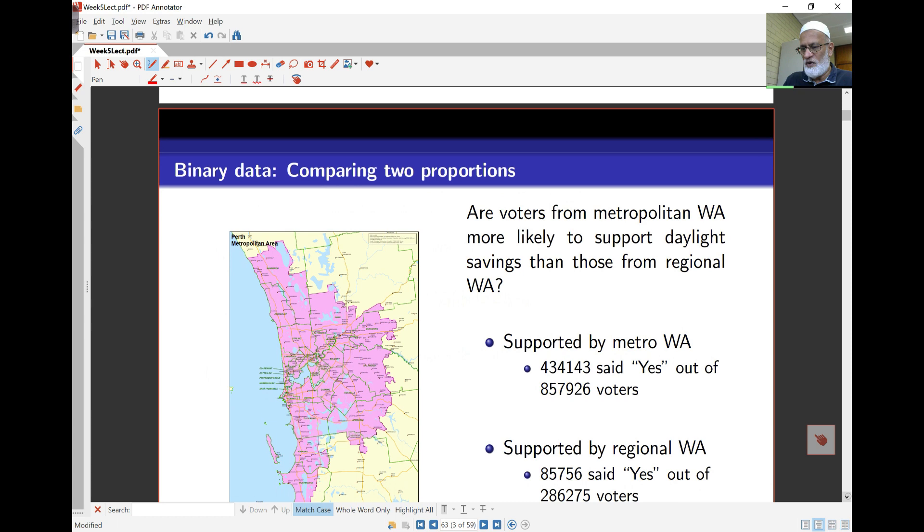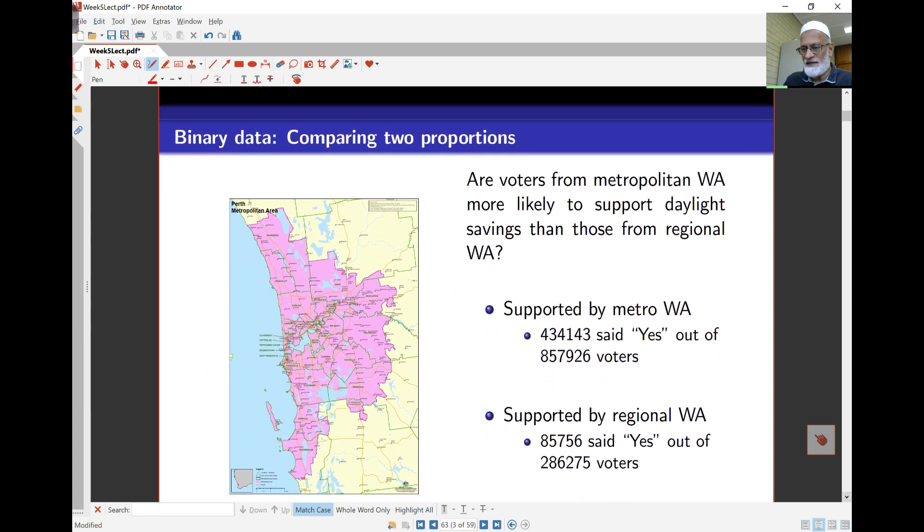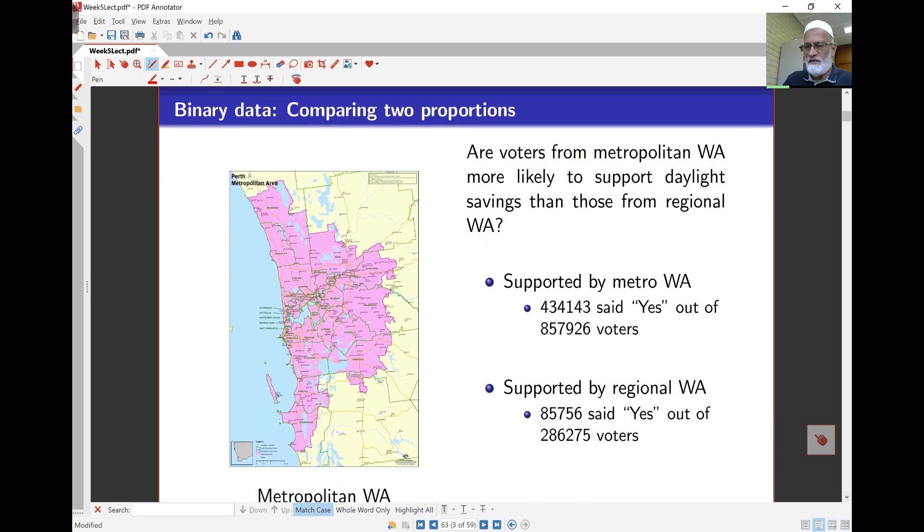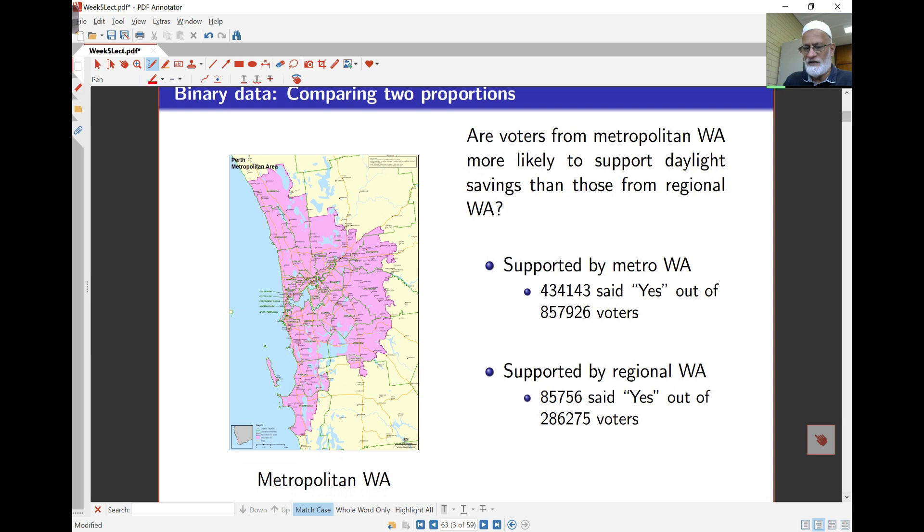We're going to compare two proportions. The example we'll start with is this daylight saving example where we had a referendum in 2009 regarding daylight saving whether we want this in WA or not. Out of the voters in the metro area, 434,000 out of 858,000 said yes. But in the regional areas, out of 286,000 voters only 85,000 said yes. Based on those numbers it looks like there is large support for daylight saving in the metro areas but very little support in the regional areas of Western Australia.